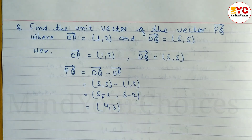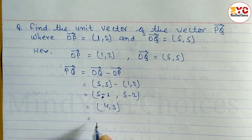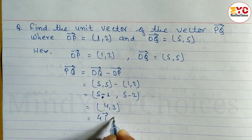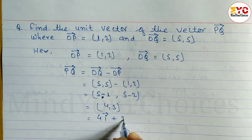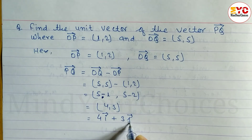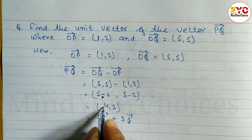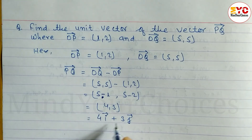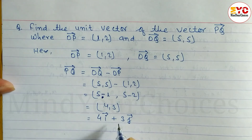PQ is equal to (4, 3). If you write in the i-j form: X coordinate gets I, Y coordinate gets J. So PQ equals 4i plus 3j.